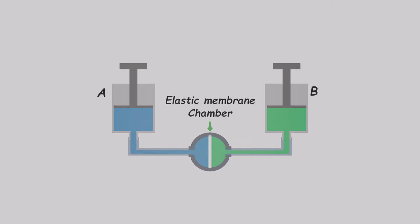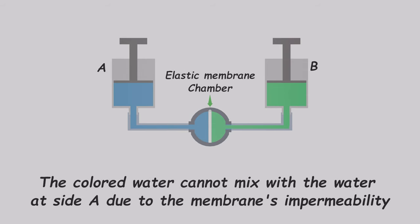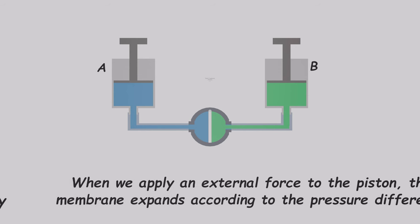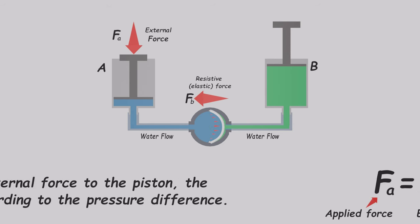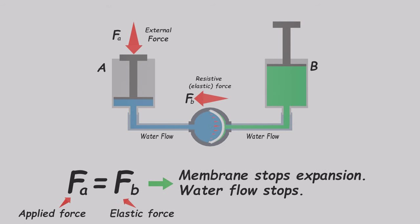Here, we have an elastic chamber connected to a water pipe, acting as a barrier between two sides. Water from side A cannot flow to side B, and vice versa. We've dyed the water in side B with green color, but it can't mix with the water in side A due to the membrane's impermeability. This elastic membrane can stretch to a certain degree, allowing the piston to move based on the water pressure difference between the two sides. The membrane halts its expansion when the elastic force matches the applied force.